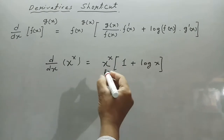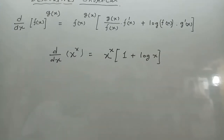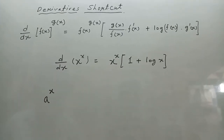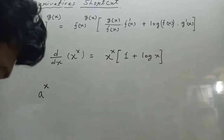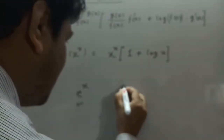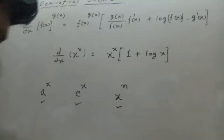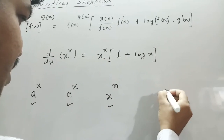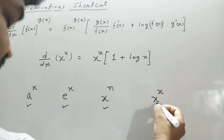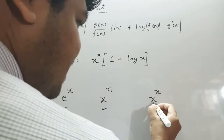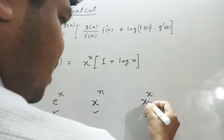Now we know the derivative of a to the power x is available, the derivative of e to the power x is also available, and the derivative of x to the power n is also available. But when we go to find the derivative of x to the power x, this derivative is not directly available.